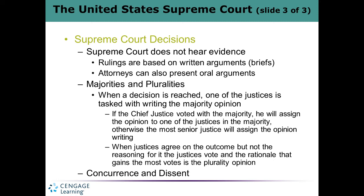If the Chief Justice is in the majority, he will pick one of the justices voting in the majority to write the decision. If he is not in the majority and five or more other justices disagree with him, then the most senior judge in the majority — say Justice Alito or Justice Thomas — will decide who gets to write the opinion.